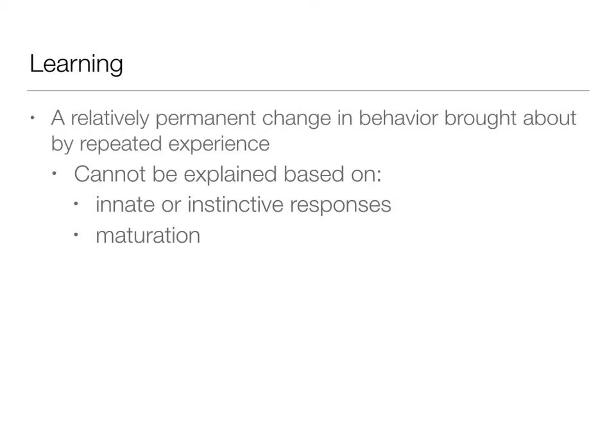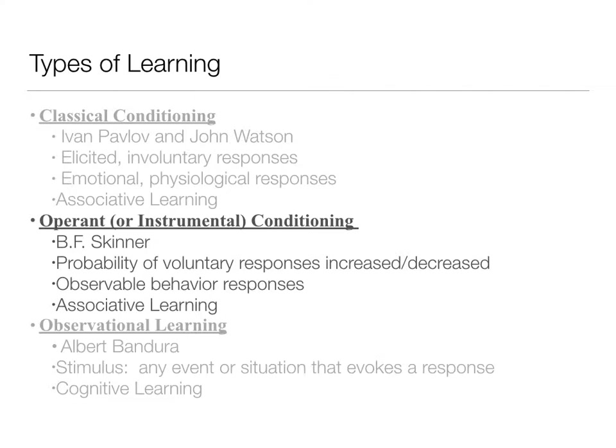We previously talked about classical conditioning. Now we're going to talk about operant conditioning. One of our big names in operant conditioning is B.F. Skinner, and he did things like the Skinner Box. With operant conditioning, we're looking at voluntary responses, whereas classical conditioning was about involuntary responses. In operant conditioning, we're talking about things the animal has voluntary control over, and we watch these observable behavioral responses.